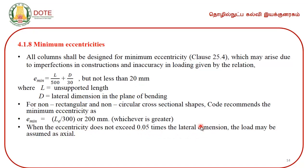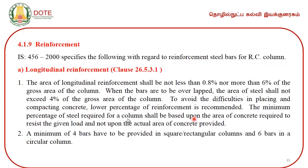As far as reinforcement of RCC columns is concerned, the code prescribes that the area of longitudinal reinforcement shall not be less than 0.8 percent nor more than 6 percent of the gross area of the column. In practical cases, where vertical bars are overlapped, the area of steel should not exceed 4 percent of the gross area of the column.